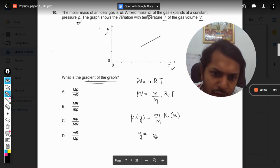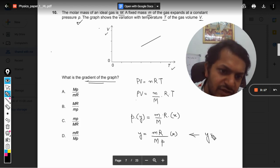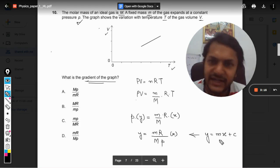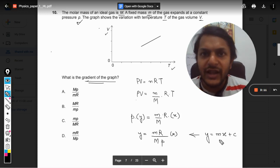So now Y equals M into R divided by capital M into P into X. So comparing this equation with Y equals MX plus C, which is the equation of a straight line,